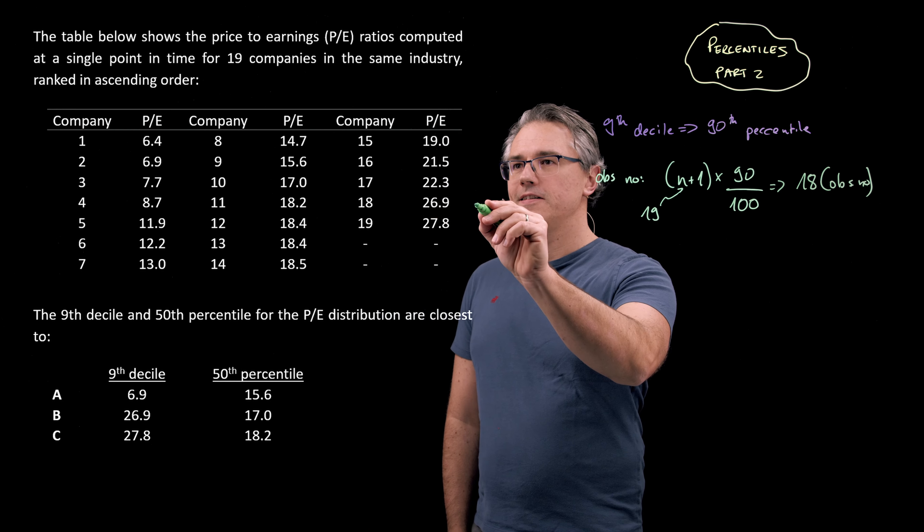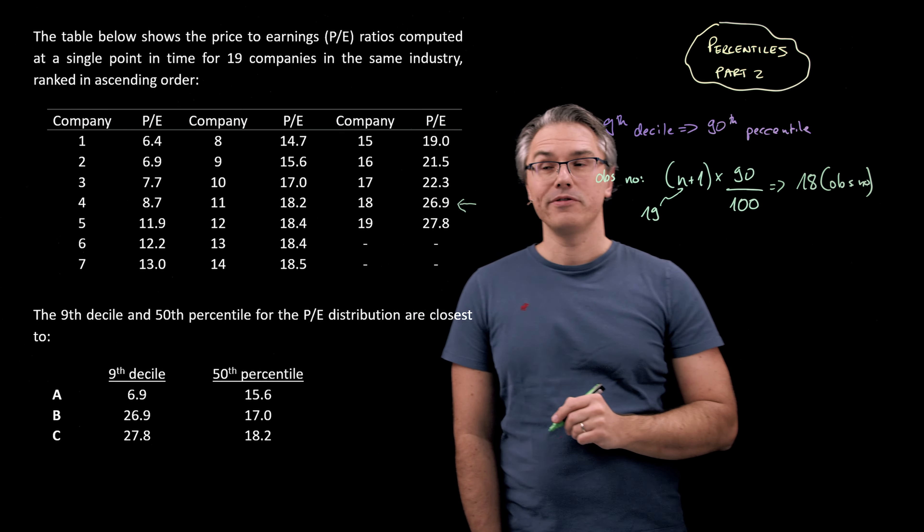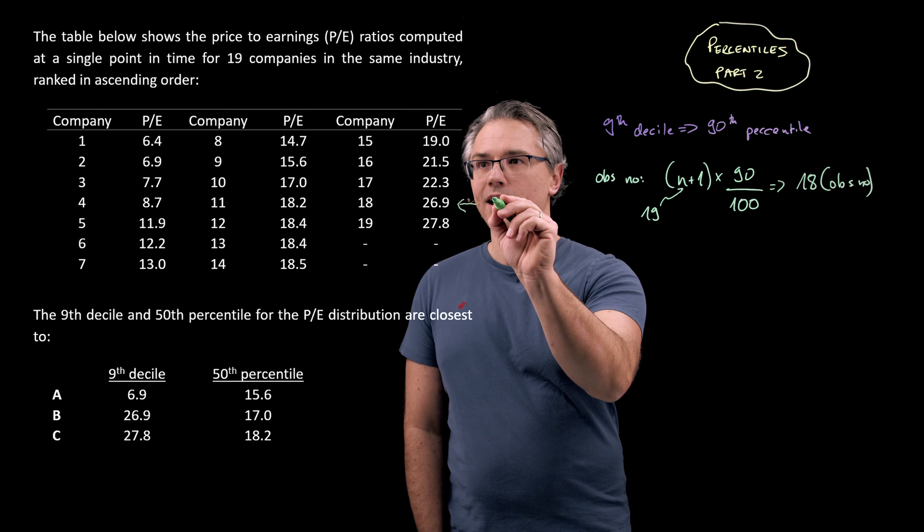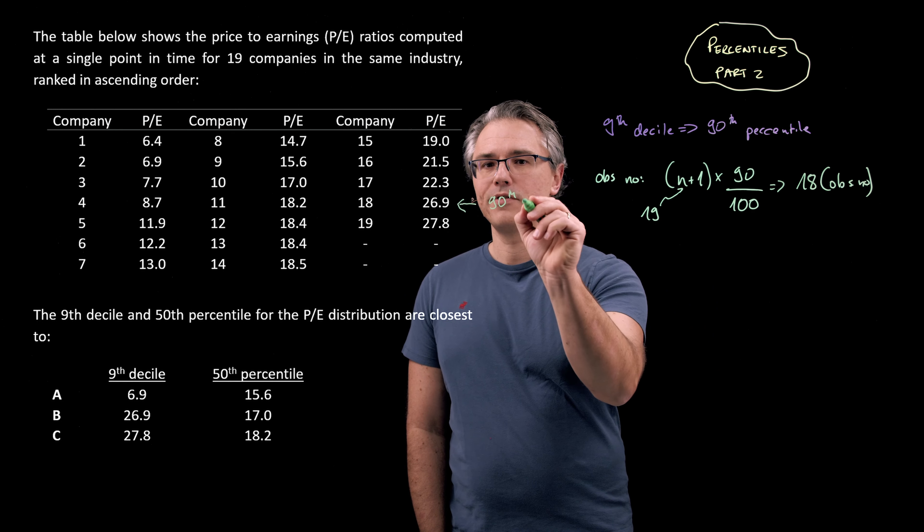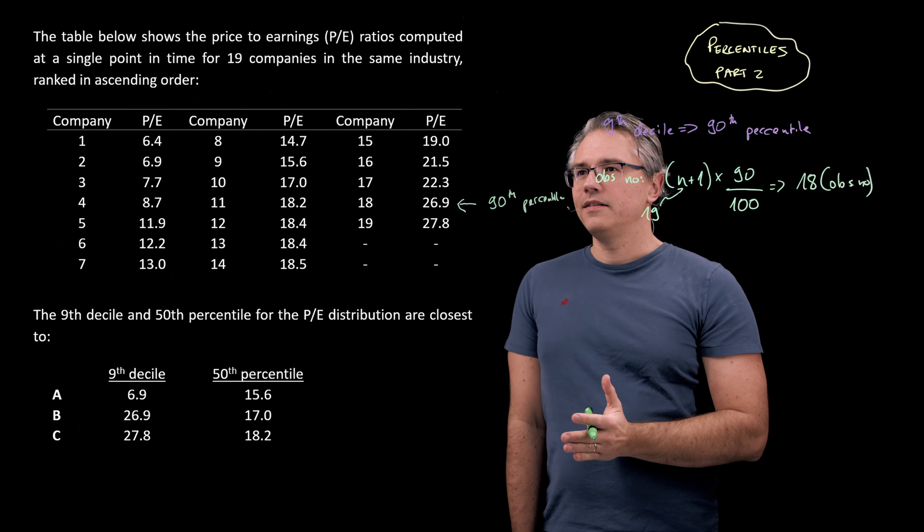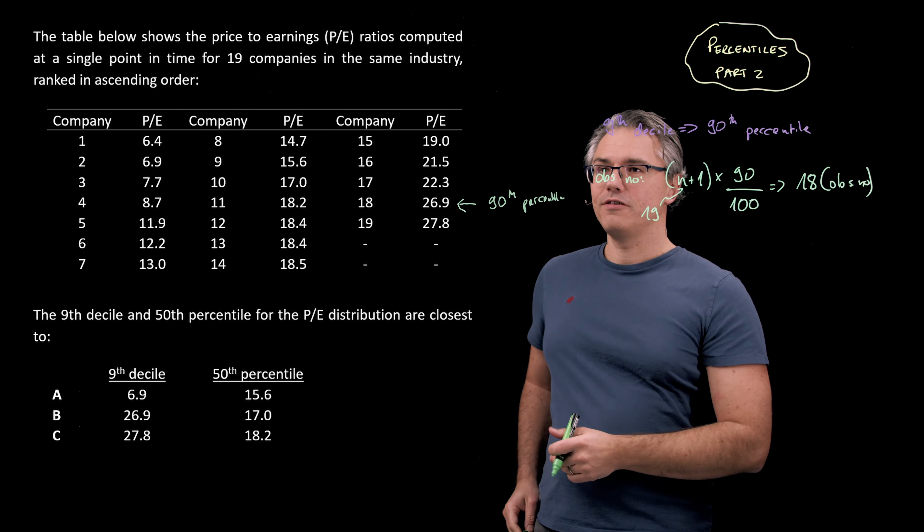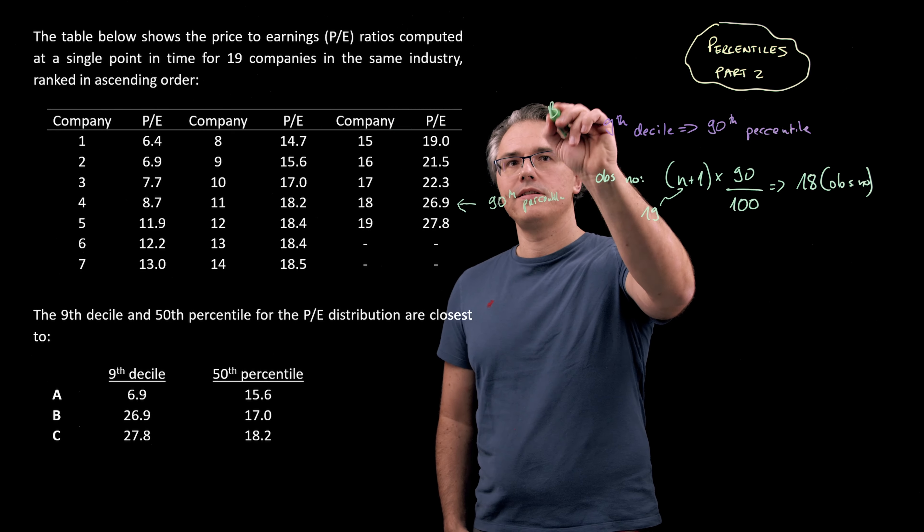Observation number 18 is over here. And as you can see, it's 26.9. So that is our 90th percentile, or ninth decile. And this corresponds very nicely with answer B. So we kind of solved the question already. Brilliant. Let me write the answer down, B.